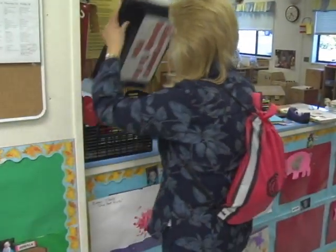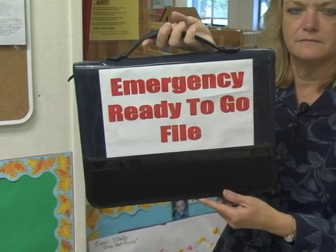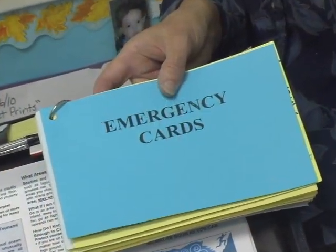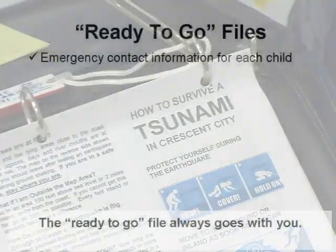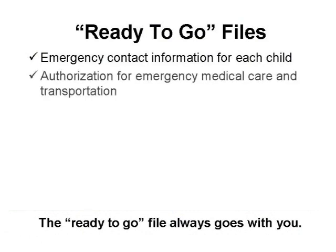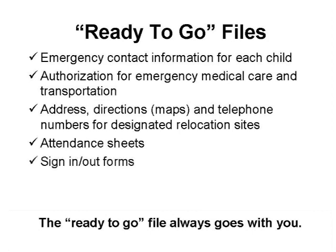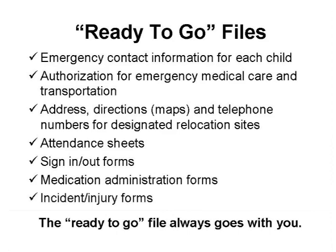An emergency does not relieve you of your responsibility of documentation. You should always have a ready-to-go file to take with you whenever you do a drill or leave your classroom or home. It should have emergency contact information for each child, authorization for emergency medical care and transportation, address, directions, forms, maps, and telephone numbers for designated relocation sites, attendance sheets, sign-in and out forms, medication administration forms, and incident injury forms.